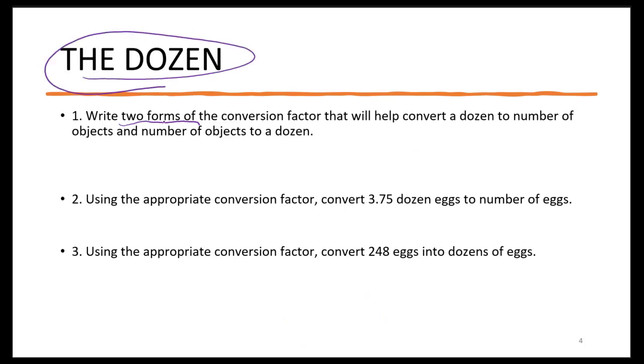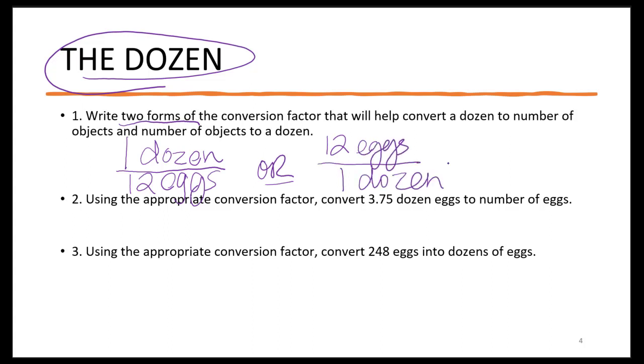Now I want to take a minute to look at our counting unit, the dozen. Let's write two forms of the conversion factor that will help convert a dozen to number of objects, and the number of objects to a dozen. So a conversion factor would be, if I said I had one dozen of something, there are 12, in this case we're going to say eggs.